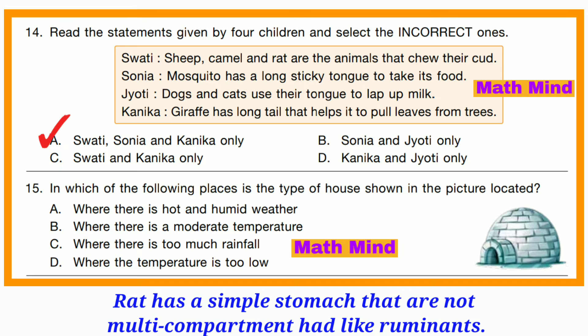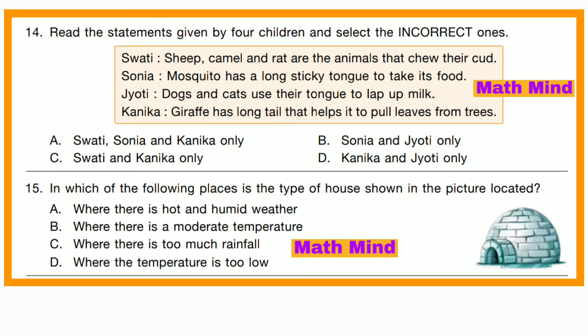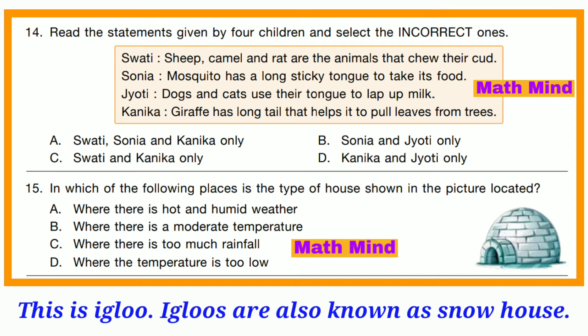Question number 15. In which of the following places is the type of house shown in the picture located? This is an igloo. Igloos are also known as snow houses. So option D is correct. Igloos are found where the temperature is too low.